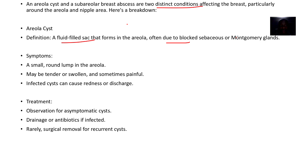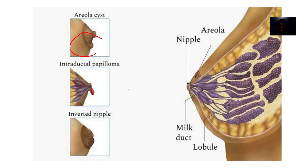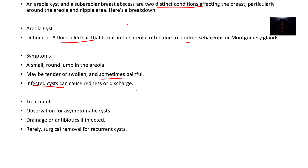Symptoms include a small round lump in the areola — as shown where I've circled it — which may be tender, swollen, and sometimes painful. It can also cause redness, nipple discharge, and some minor inflammation leading to redness.